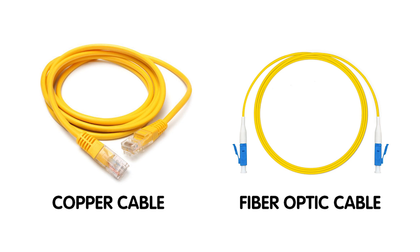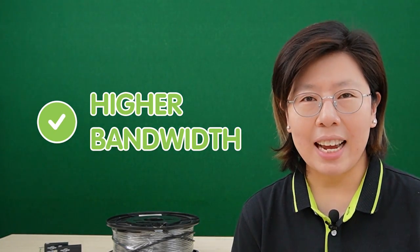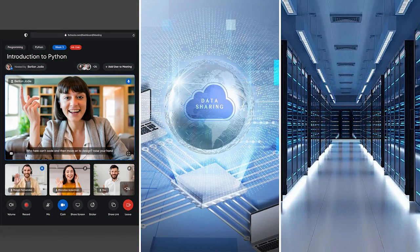To build a local area network, we can choose from using copper cable or fiber optic cable. I prefer the fiber optic cable because it offers several benefits compared to copper. Fiber optic cable can transmit data over much longer distances without signal degradation, whereas copper cable experiences signal loss over longer distances. Also, fiber optic cable has much higher bandwidth capacity that can support significantly faster data transfer rates, making them ideal for video streaming, cloud computing, and data centers.